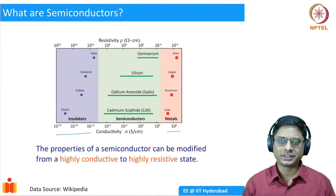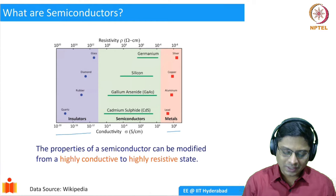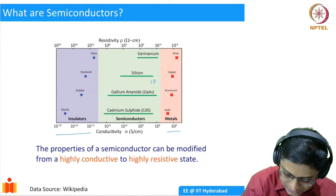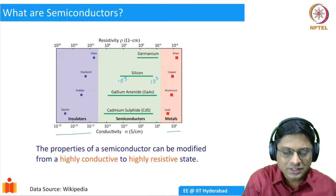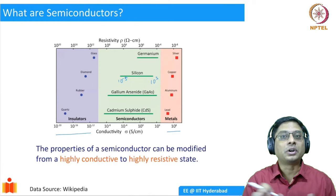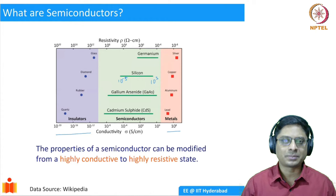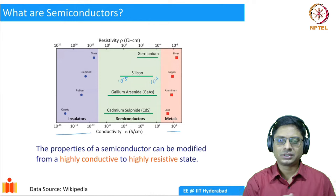Between these two extremes, there is a very broad range of materials which have intermediate conductivity. The most prominent example of these semiconductors is silicon. You see in the graph that silicon has a conductivity ranging between 10^-5 to 10^3 Siemens per centimeter — about 8 orders of magnitude difference. Whereas metals and insulators have a fixed amount of conductivity, the conductivity of silicon can be tuned over 8 orders of magnitude by changing certain properties, which we will come to later.